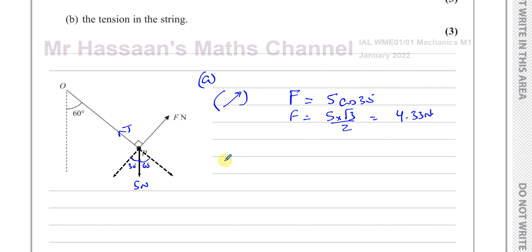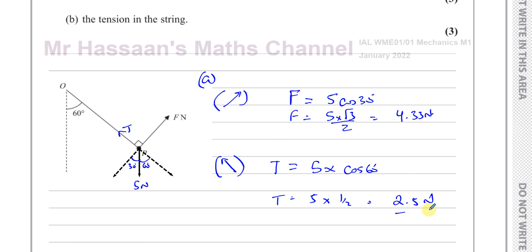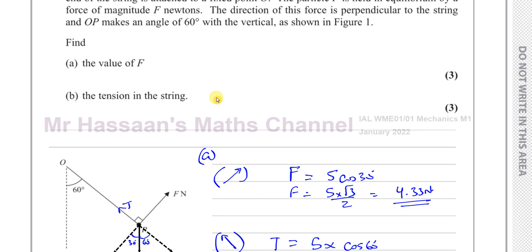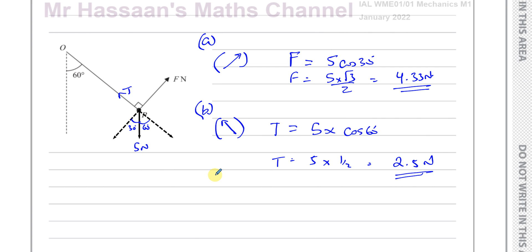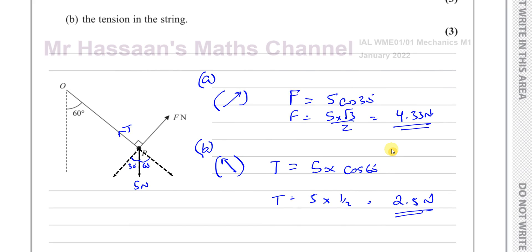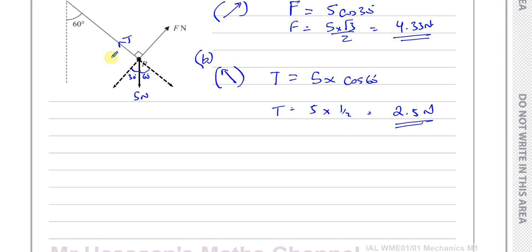Then we can resolve the forces in the direction of the tension. In this case, F has no component in that direction because it's perpendicular. So the tension equals 5 times cosine 60, which is 5 times a half, giving 2.5 newtons. So there we have the answer to parts A and B. If forces are perpendicular to each other and you resolve in their own directions, they become zero, so you don't need to form simultaneous equations — it makes life much easier.